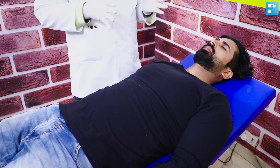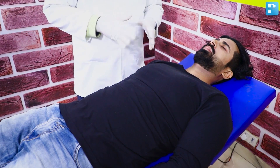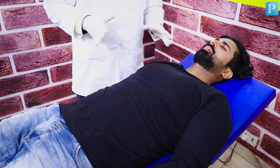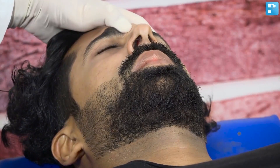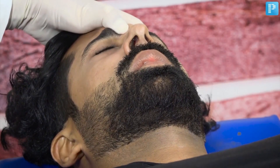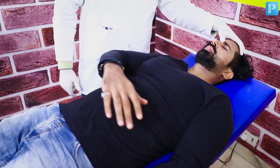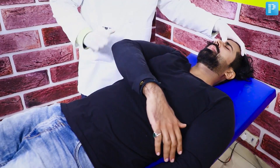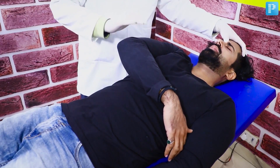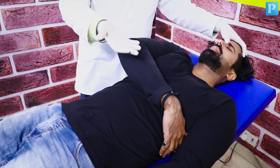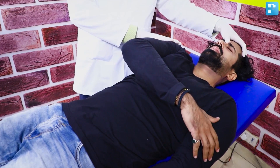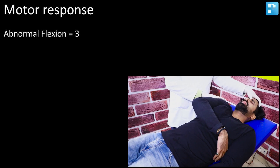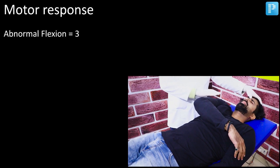I have come to the bedside. I have evaluated the motor score — the patient is not following any commands. I am pressing on the supraorbital notch. There is definitely the arm moving across, and there is a movement across the shoulder as well. I would call this abnormal flexion, and the score would come down to 3.